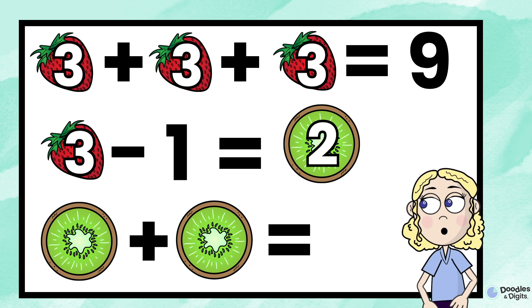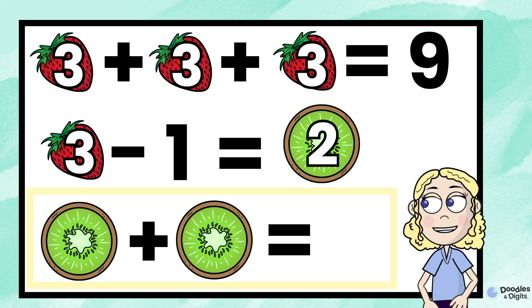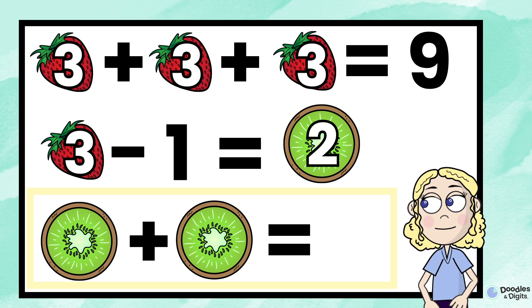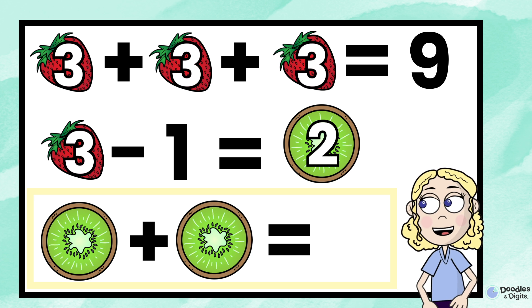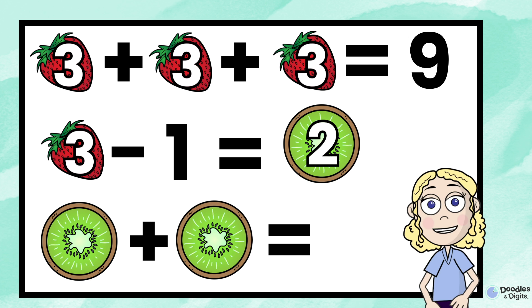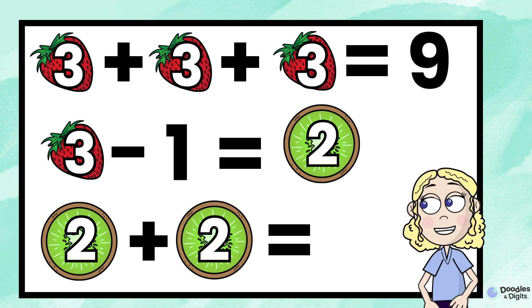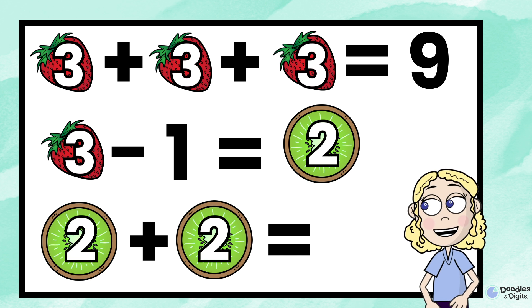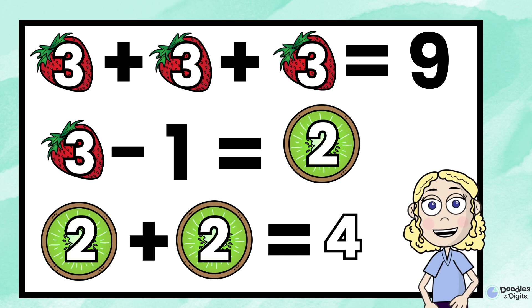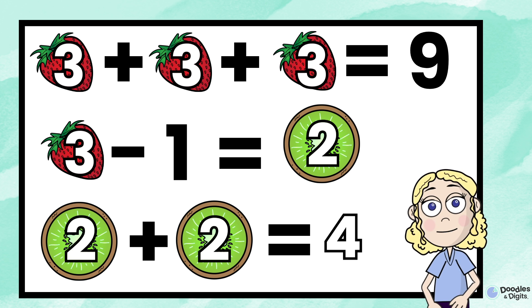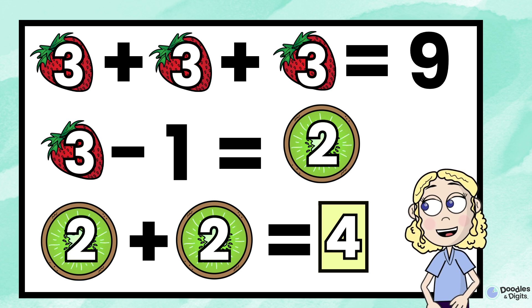Now we're on the last problem. Kiwi plus kiwi equals what? We now know that the kiwi represents two. So two plus two equals four. And our answer is four. Did you get it correct?